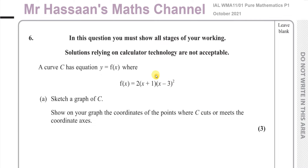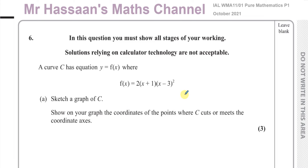Here we have a question about a cubic curve. It says a curve has equation y equals f of x, where f of x equals 2 times (x plus 1) times (x minus 3) squared, and we've got to sketch the graph of this curve C. We can see it's cubic because if you expand all of these, you'll end up with an x cubed as the highest power.